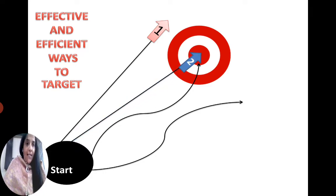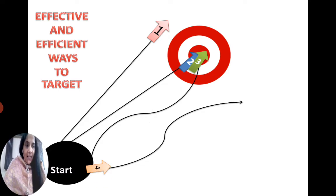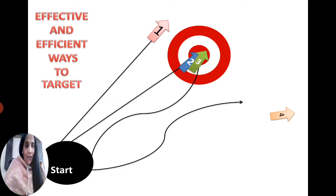The third alternative also starts, but it diverts. Even then, after some diversion, it also hits the target. The fourth alternative keeps diverting and goes nowhere.